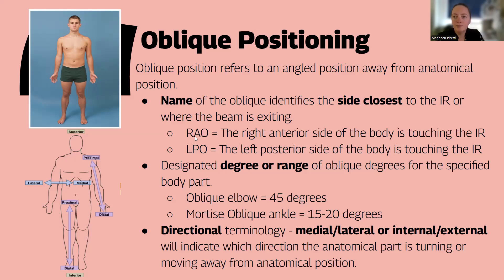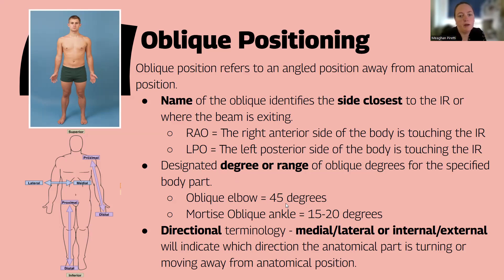It's either right anterior or left posterior — these first two letters are the key. The O just means they're an oblique. There's also a designated degree or range of degrees for that body part. So an oblique elbow is a 45-degree oblique, while the mortise ankle has a range of 15 to 20. Making sure you're actually in those specific degrees or that range is important.